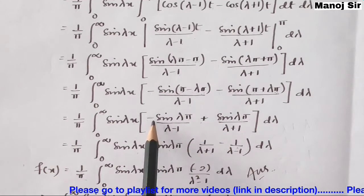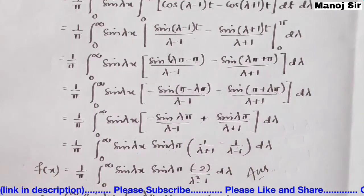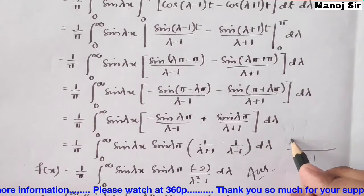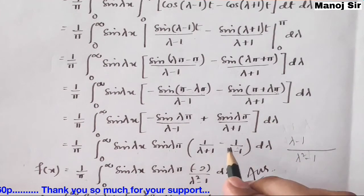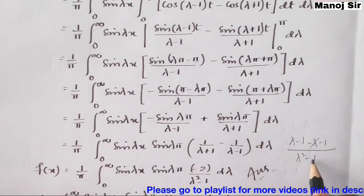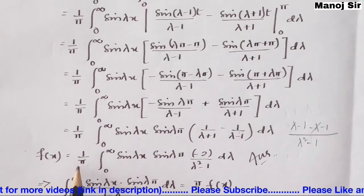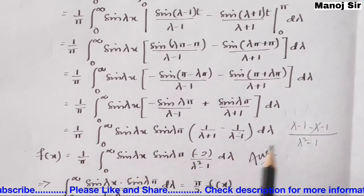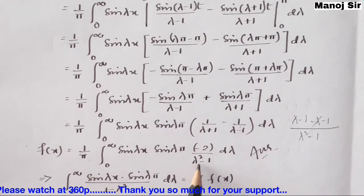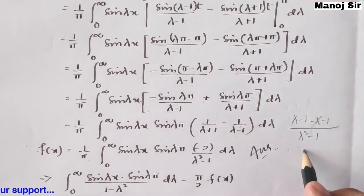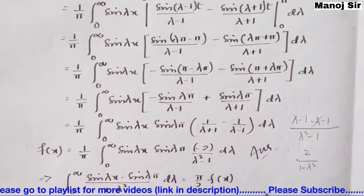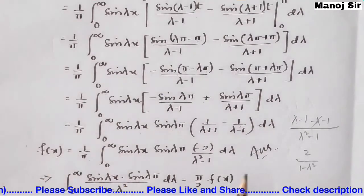Taking LCM of (λ + 1) and (λ − 1): the numerator becomes (λ − 1) − (λ + 1) = −2, and the denominator is λ² − 1. So we get −2 / (λ² − 1), giving f(x) = (1/π) ∫₀^∞ sin(λx) sin(λπ) · [−2 / (λ² − 1)] dλ, or equivalently 2 / (1 − λ²).